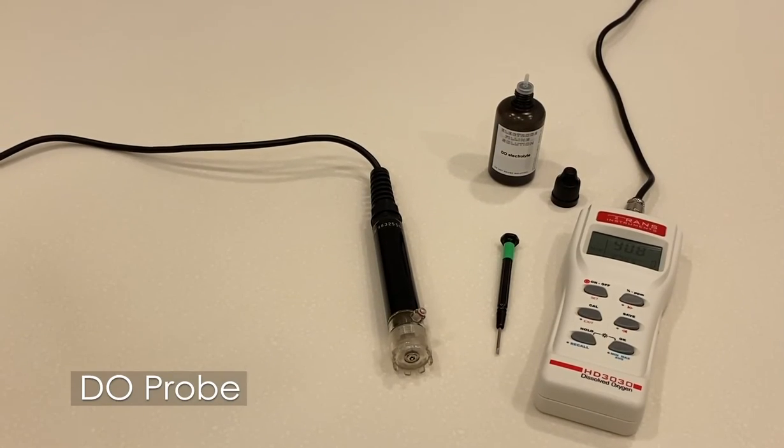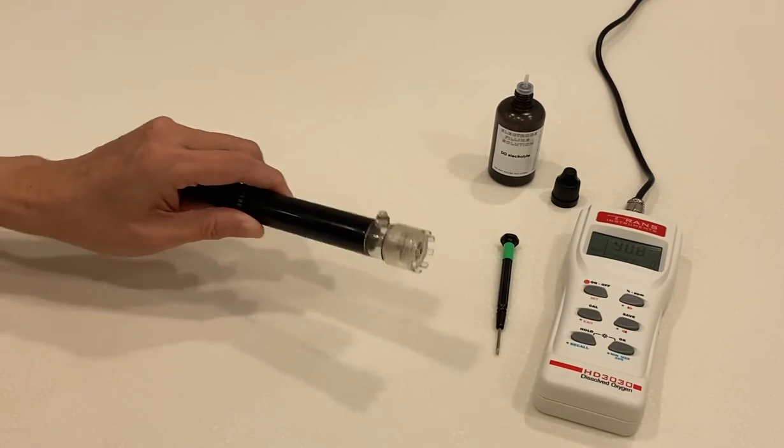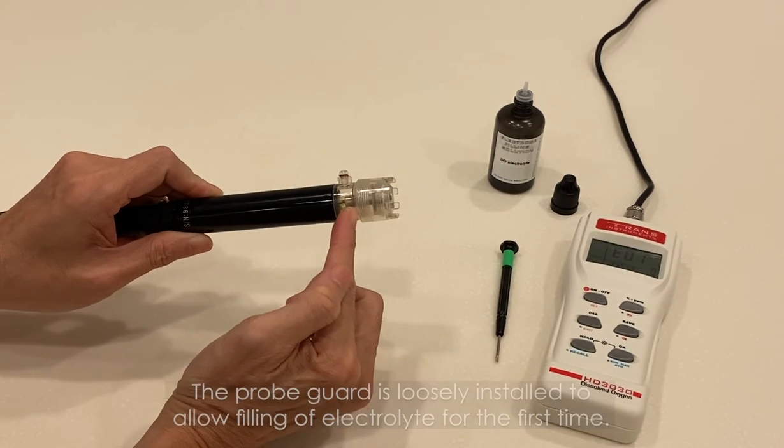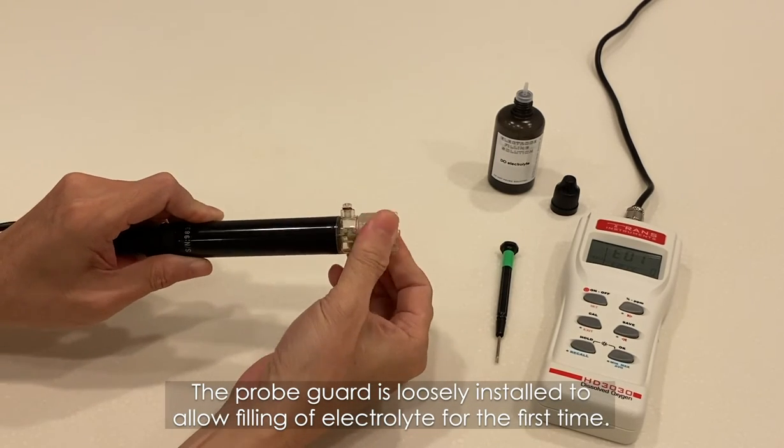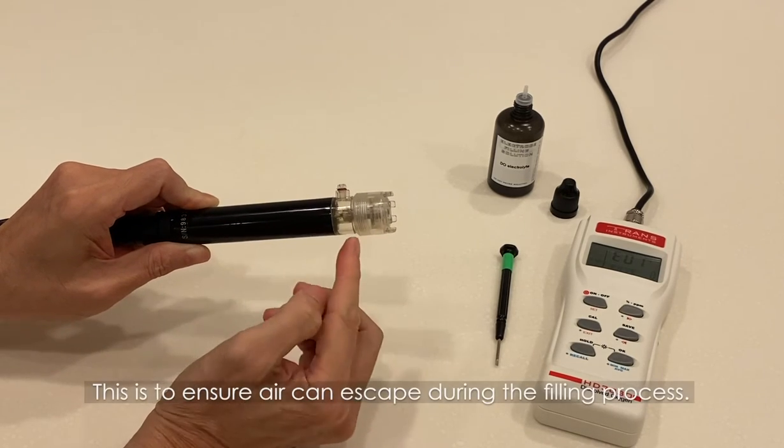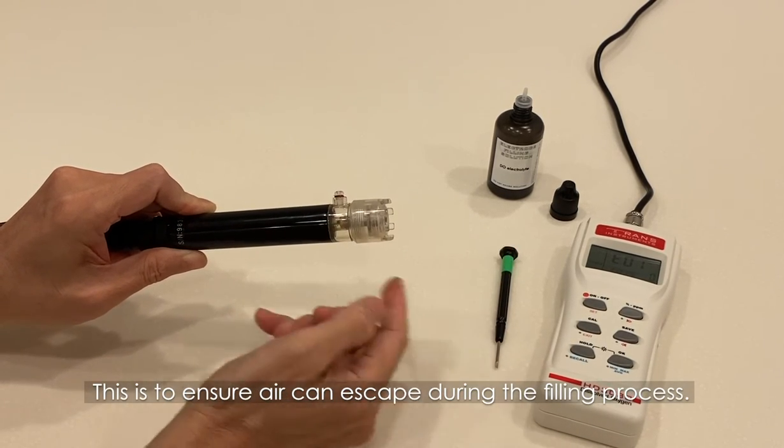Let us take a look at the DO probe. For long-term storage, the DO probe comes without the electrolyte. The probe guard is loosely installed to allow filling of the electrolyte for the first time. This is to ensure air can escape during the filling process.